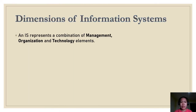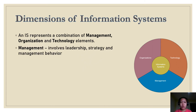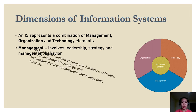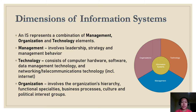Other dimensions of information systems: an IS represents a combination of management, organization, and technology elements. Management involves leadership, strategy, and management behavior. Technology consists of computer hardware, software, data management technology, and networking or telecommunications technology, which now includes the internet. For the organization, it involves the organization's hierarchy, functional specialties, business processes, culture, and political interest groups.